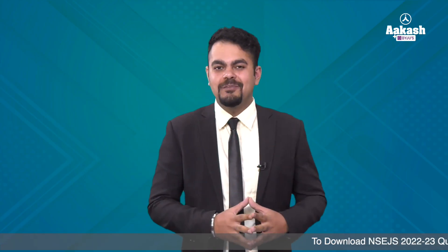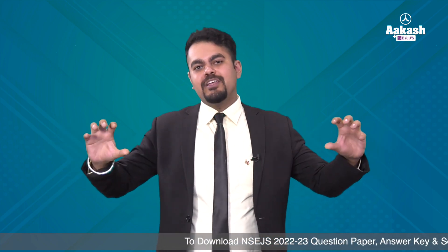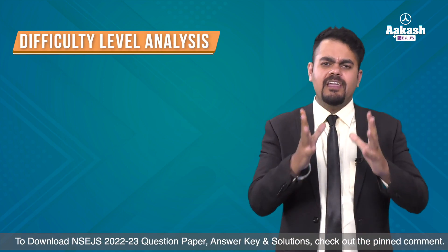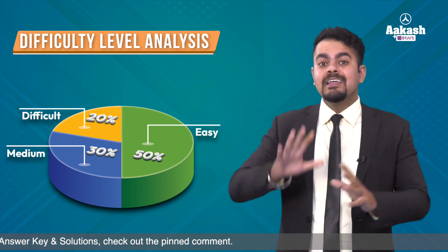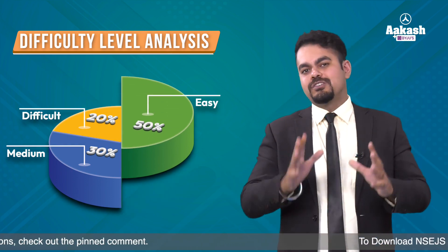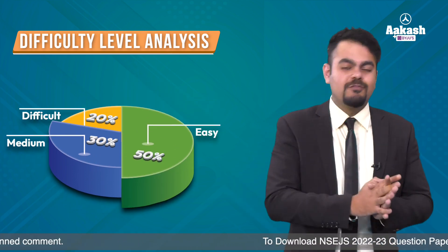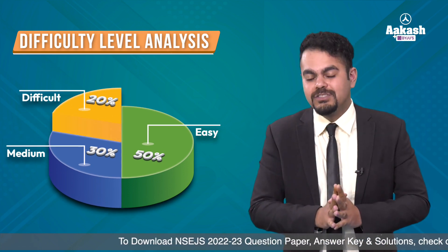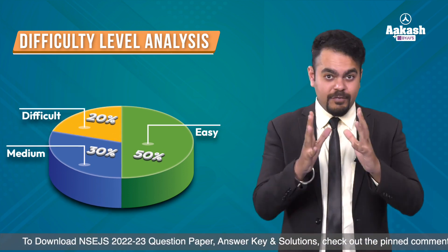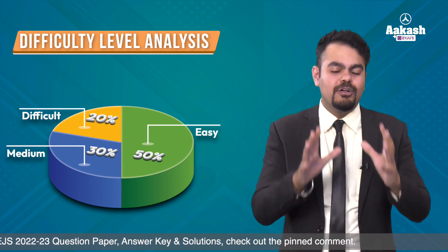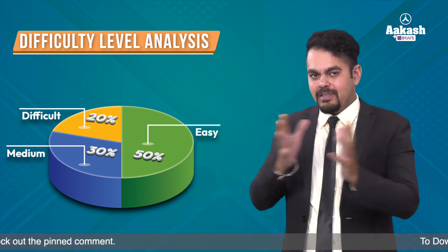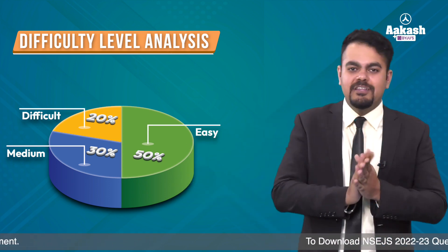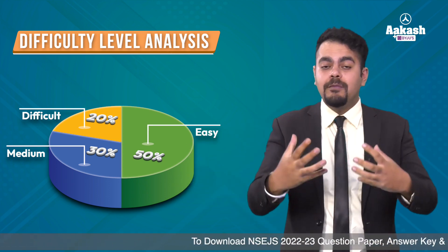There were 20 questions in the biology section. Analyzing them by difficulty level: 50 percent of the questions were easy, 30 percent were medium, and only 20 percent were difficult. We can conclude that the biology section ranged from easy to moderate, with the difficult questions being from concepts of Class 9th and 10th extending towards Class 11th and 12th.